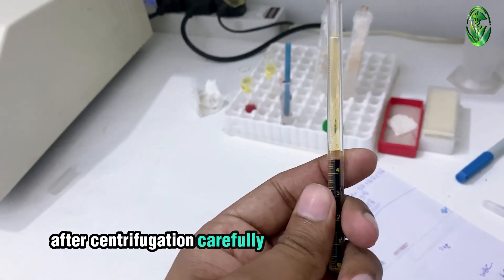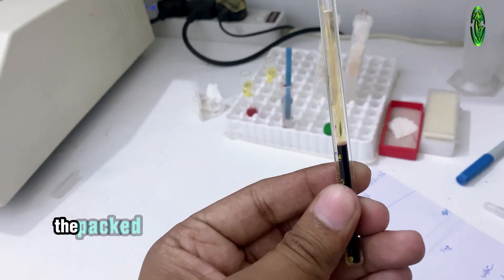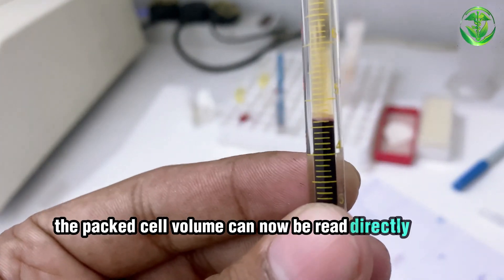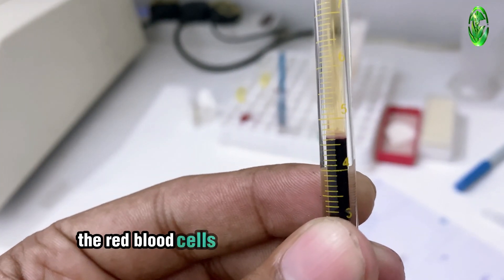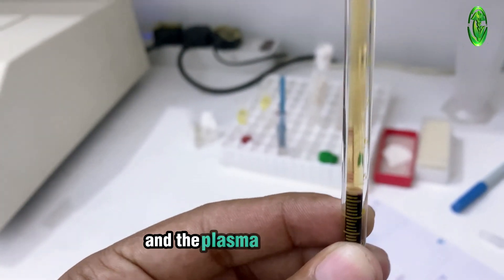After centrifugation, carefully remove the Wintrobe tube. The packed cell volume can now be read directly from the tube. The red blood cells will be packed at the bottom, and the plasma will be on top.